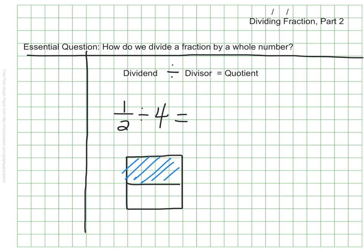My divisor is 4, so I want to cut my half into four equal parts. I'm going to take this and I'm going to cut this into four equal parts. And when I do that, I see that if I cut 1 half into 4, each section is this large.